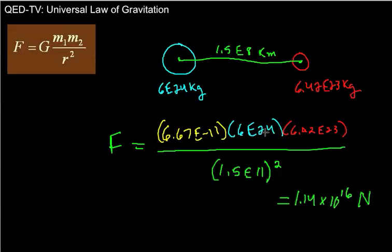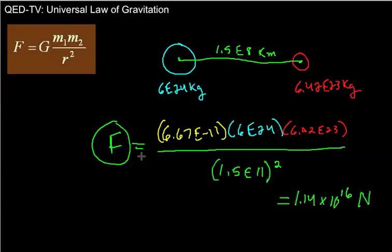If two objects are really small, like a pencil and a pen, their masses are tiny and the force between them will be extremely small — almost zero — which is why we can't really sense gravitational force between small objects. The force only becomes noticeable when one of the objects is extremely massive, on a planetary scale. We can measure the force between very small objects, but you can't sense it without one object being really, really huge.